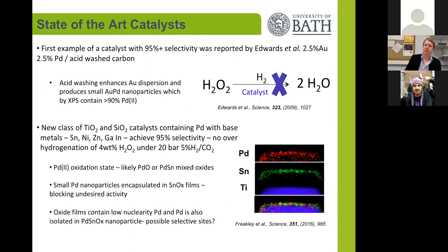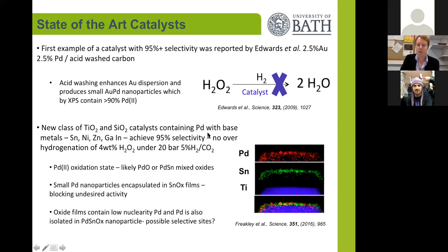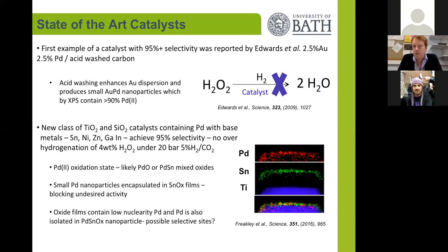More recently, work that we did in Cardiff four or five years ago allowed us to develop a new class of catalyst supported on titania and silica. These catalysts contain palladium with base metals such as tin, nickel, zinc, gallium, or indium — about five or six different examples — and they were all able to achieve over 95% selectivity. We showed that there was no over-hydrogenation of hydrogen peroxide up to four weight percent under 20 bar of 5% hydrogen, and we could recover 4% hydrogen peroxide at the end of the reaction.